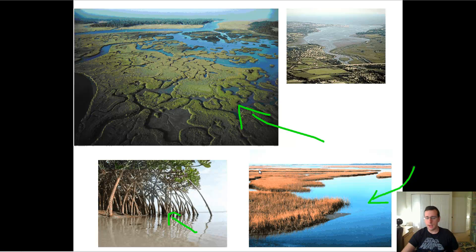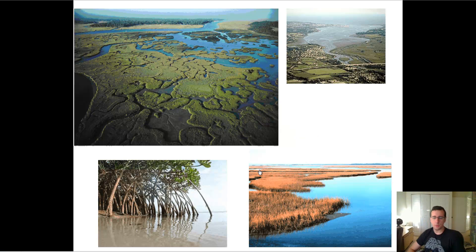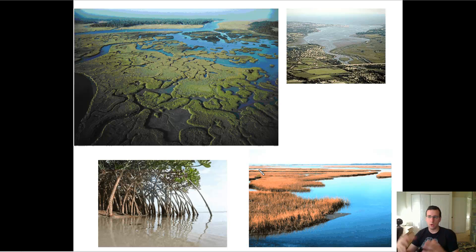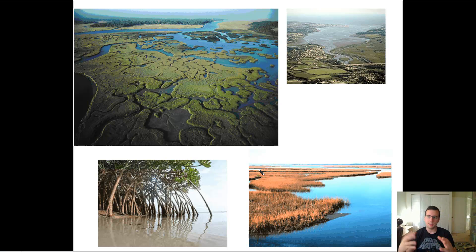But these are both estuaries, which are aquatic ecosystems where there's a mixture of salt water, and the plants and animals living in that environment have to be able to adapt to that. Later in the year we might talk about some of the adaptations that are peculiar to organisms that live in these kinds of environments. And we'll see you next time.